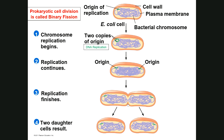The initial prokaryotic cell that entered binary fission is called the parent cell. The two cells it divides into are called identical daughter cells — not just in appearance, but because they have exact copies of the same DNA. Therefore, they both carry the same genetic information as each other and as the parent cell they came from.